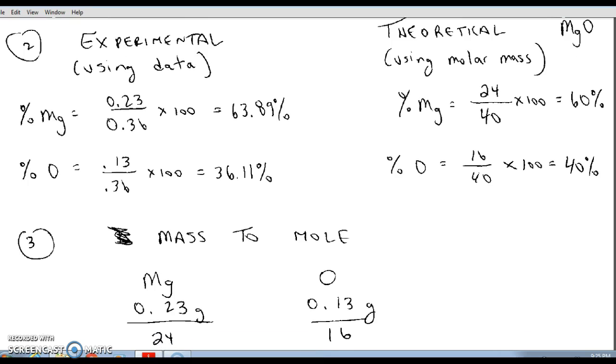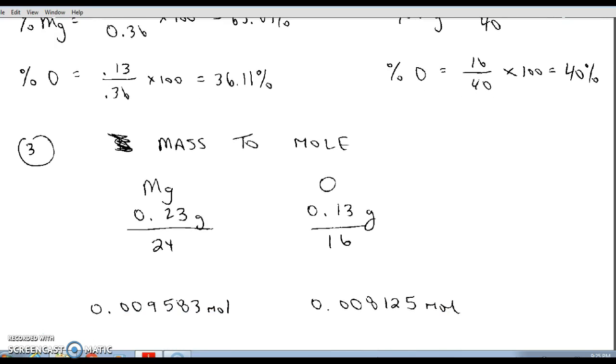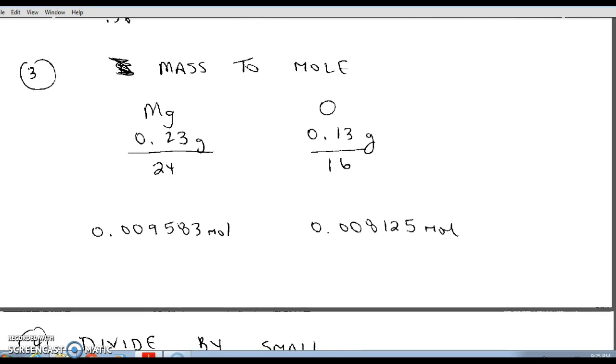Question number three asks you to find the moles of magnesium and the moles of oxygen. I'm just using my answers to number one of grams and dividing by the molar mass of each element from the periodic table to get the moles. This is the mass to mole step of the empirical formula process. We take the mass that was measured and we divide by the molar mass in grams per mole to get the moles of each element that we have. We want to keep a lot of significant figures in this step so I chose to keep four significant figures in each one of my number of moles.